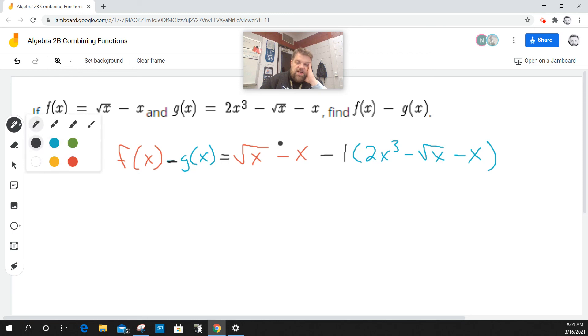So the first thing that I've got to do, f(x) just stays the same. But now I've got to distribute this negative 1 through the parentheses. And really that just changes the sign of each term, right? Because a negative 1 times a negative square root of x just makes it a positive square root of x, and a negative times a negative x just makes it a positive x.